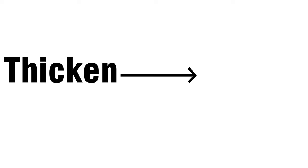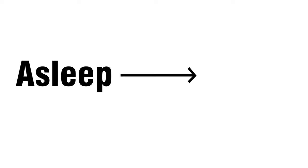Thicken. This is a place where you cook food. Answer is kitchen. Asleep. This is a word used by polite people. Answer is please.